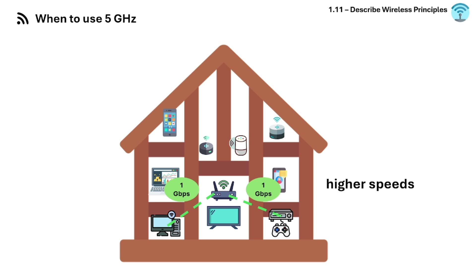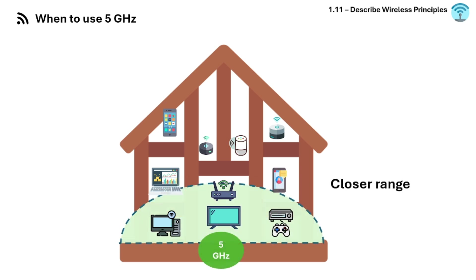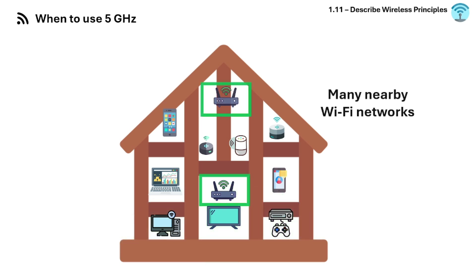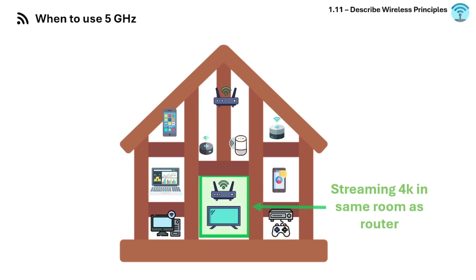Choose 5 GHz if you want higher speeds for video streaming, gaming, or video calls, your device and router support 5 GHz and are within close range, or there are many nearby Wi-Fi networks causing interference. For example, if you're gaming or streaming 4K in the same room as your router, 5 GHz will give you faster, more stable performance.